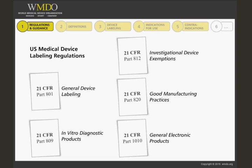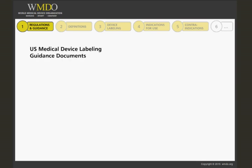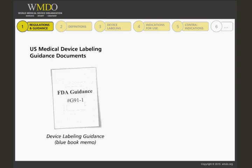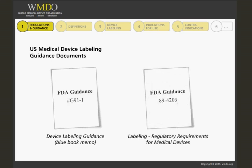It is always recommended to use the original text sourced from the relevant webpages when preparing regulatory documents. In addition, two labeling guidance documents are necessary to understand and perform the right steps. We have first the Device Labeling Guidance Blue Book Memo. Then there is the document entitled Labeling, Regulatory Requirements for Medical Devices. We will cover and cite much of the content in these two guidance documents during this course, and the web links for them are comprised in the references list that is part of your course resources. Go there, read them, and use them.